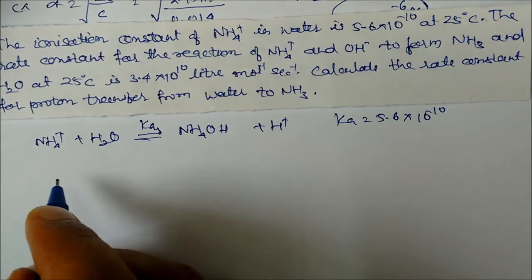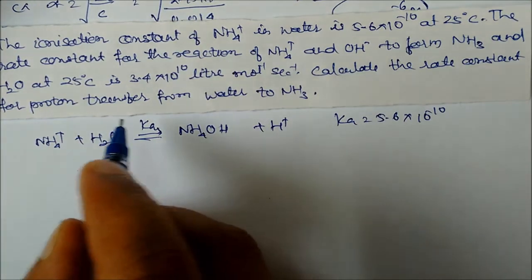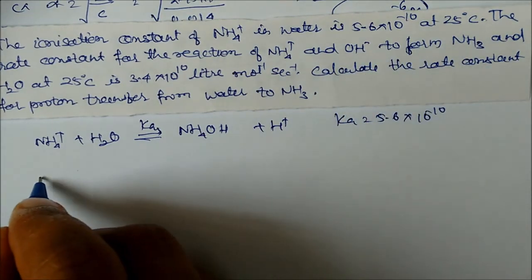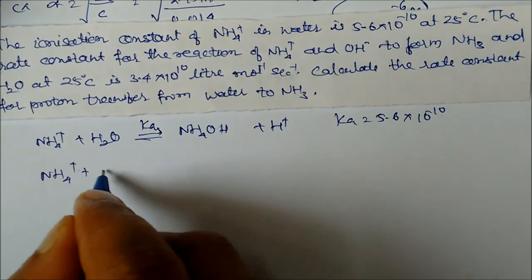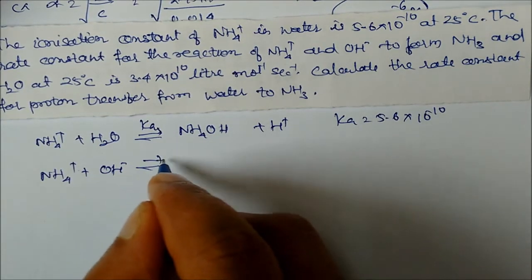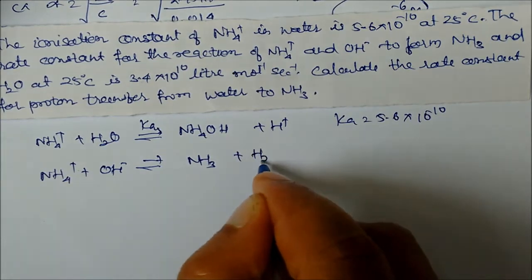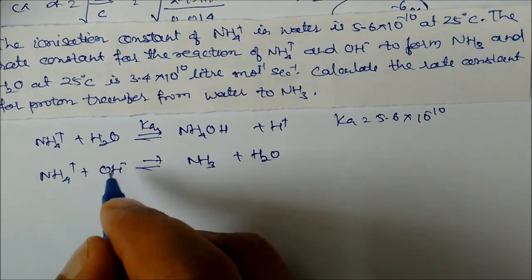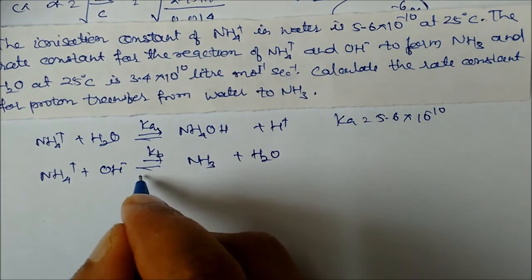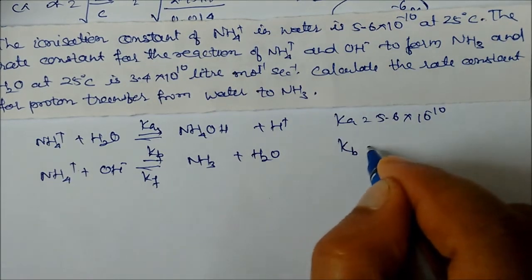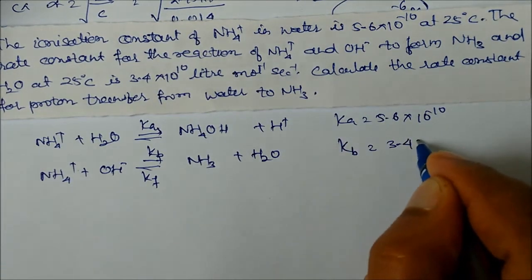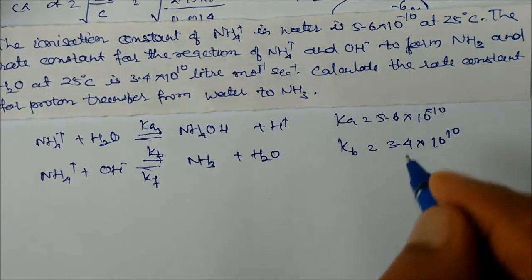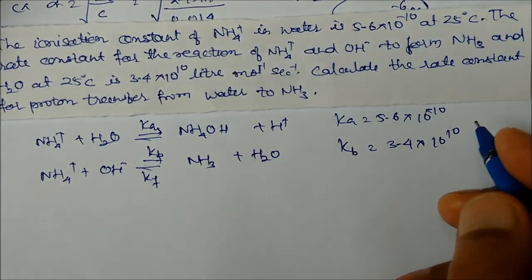The reverse reaction is: NH₃ + OH⁻ → NH₄⁺ + H₂O, with rate constant Kb = 3.4×10¹⁰ L mol⁻¹ s⁻¹. Here OH⁻ accepts a proton. This is the forward reaction KF. So KB = 3.4×10¹⁰ is given. The relationship for conjugate acid-base pairs uses KW = KA × KB.